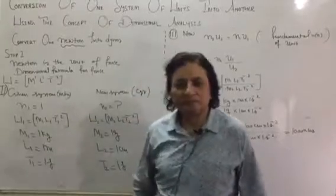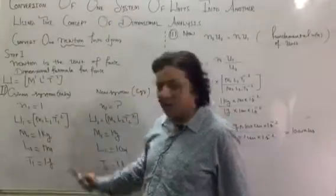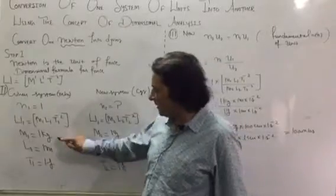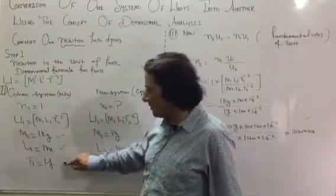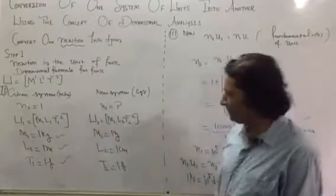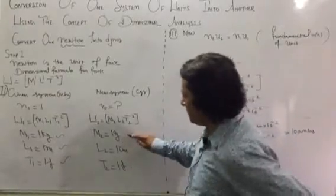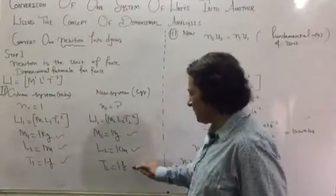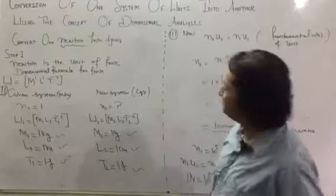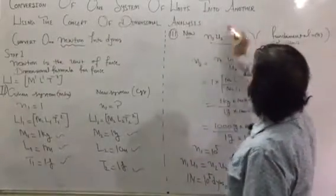For the given system, n1 is 1, u1 is M1 L1 T1 minus 2. Then m1 is 1 kilogram, l1 is 1 meter, t1 is 1 second. And m2 is 1 gram, l2 is 1 centimeter, t2 is 1 second.